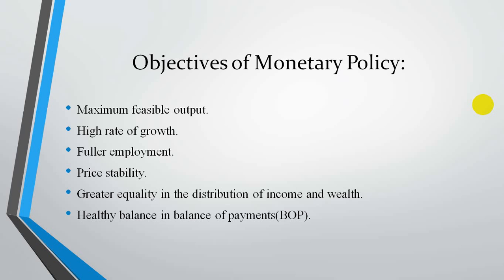The fourth objective is price stability. The demand and supply situation needs to be matched because if they don't match, the result can be inflation or recession. The fifth objective is greater equality in the distribution of income — the society should not be divided into rich and poor, and monetary policy tries to reduce this difference to the maximum extent.